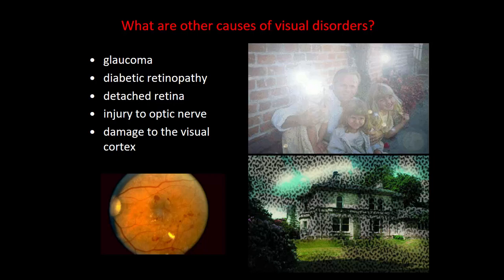There are other causes of visual disorders to read about in your textbook. Remember that anything affecting anywhere along the visual pathway can cause visual impairment. Glaucoma, where there's an increase in pressure of the fluid inside the eyeball, can affect vision. Diabetes can affect vision because it affects the health of blood vessels supplying nutrients to the eye, causing parts of the retina to degenerate — this is called diabetic retinopathy. We can see areas of the retina where blood vessels have burst and degeneration near the fovea as a result of damage to blood vessels in the eye.